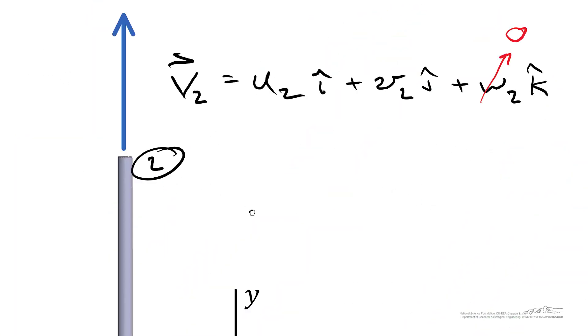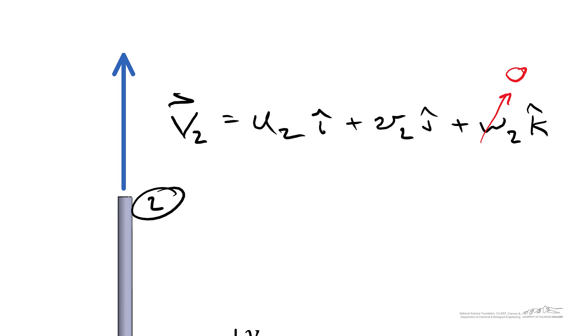If we examine the velocity vector on the left, when we decompose it we find there's no horizontal component of velocity. So u2 equals zero, and v2 is in the positive y direction, or greater than zero.